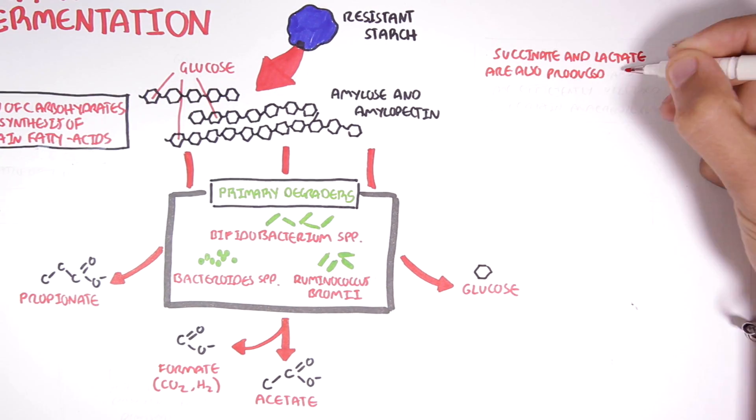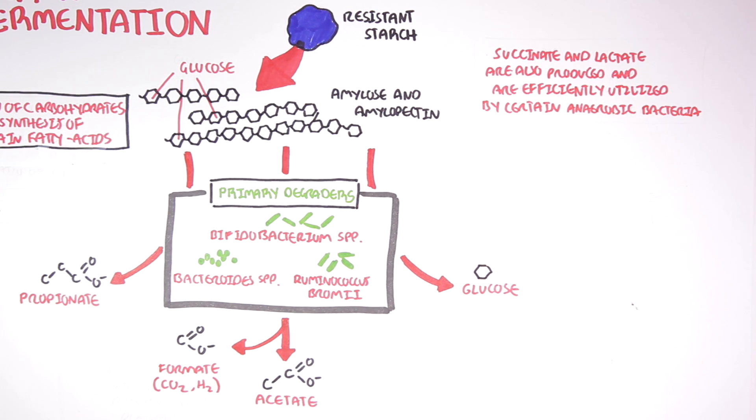Now succinate and lactate are also produced by these primary degraders and are efficiently utilized by certain anaerobic bacteria.